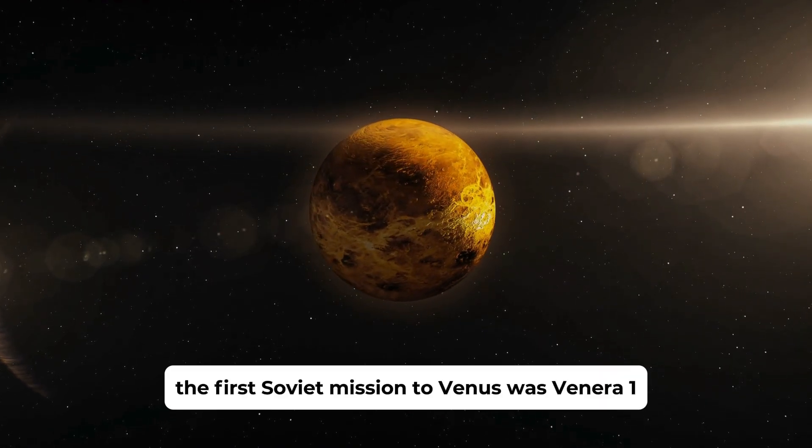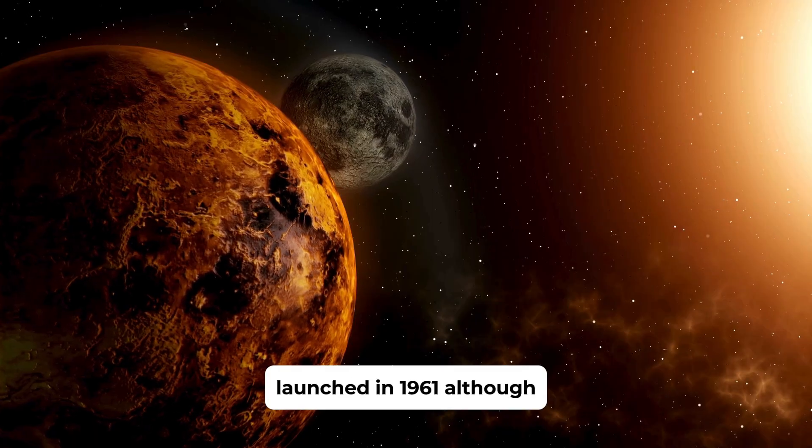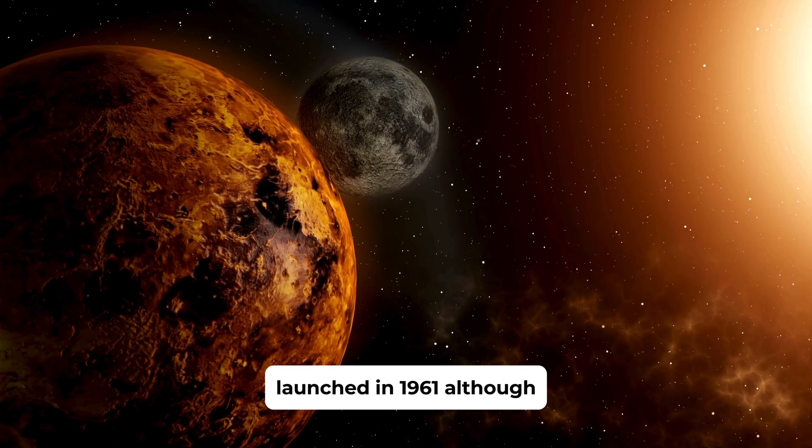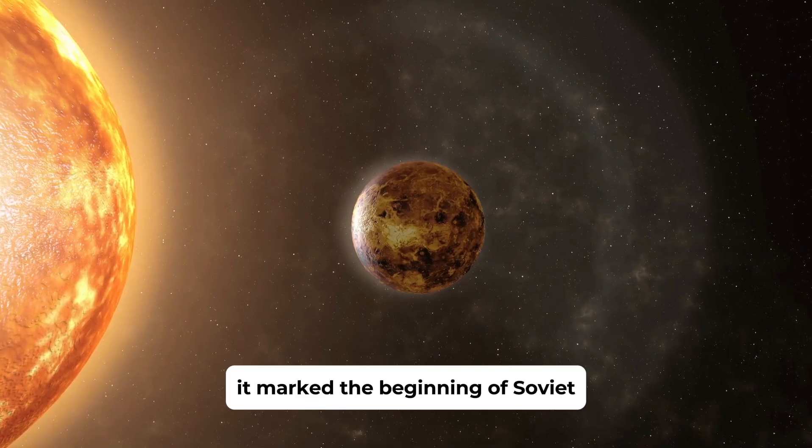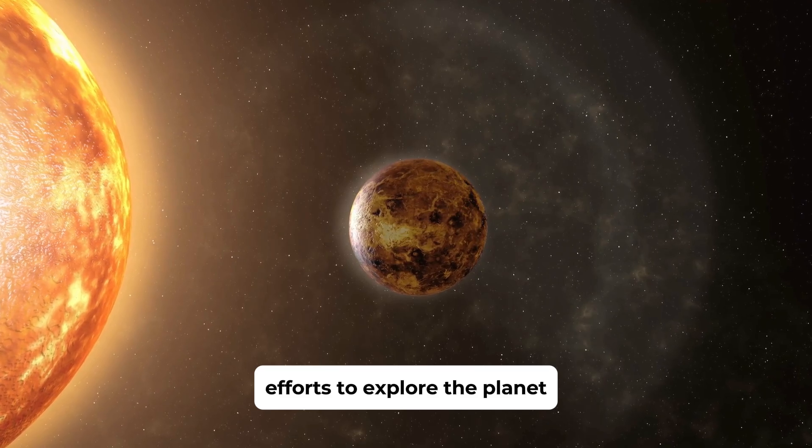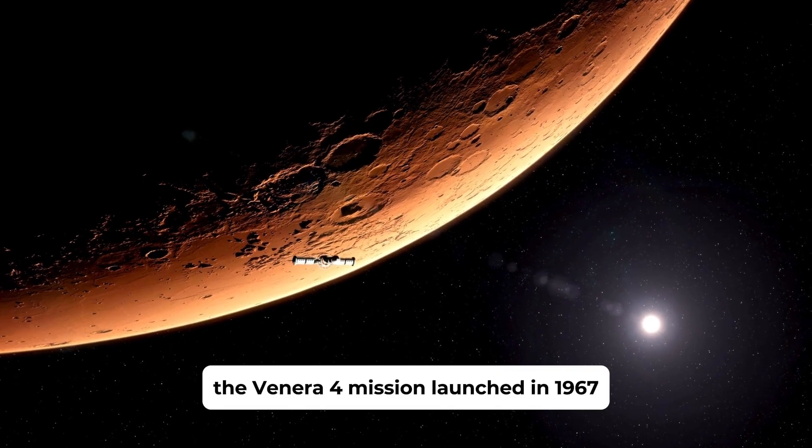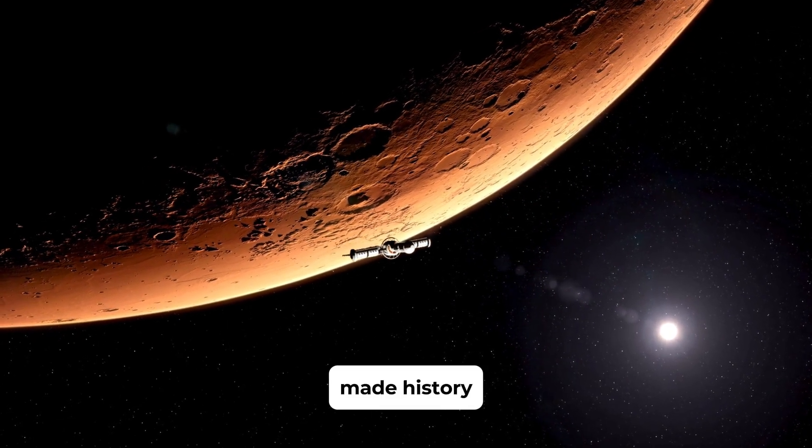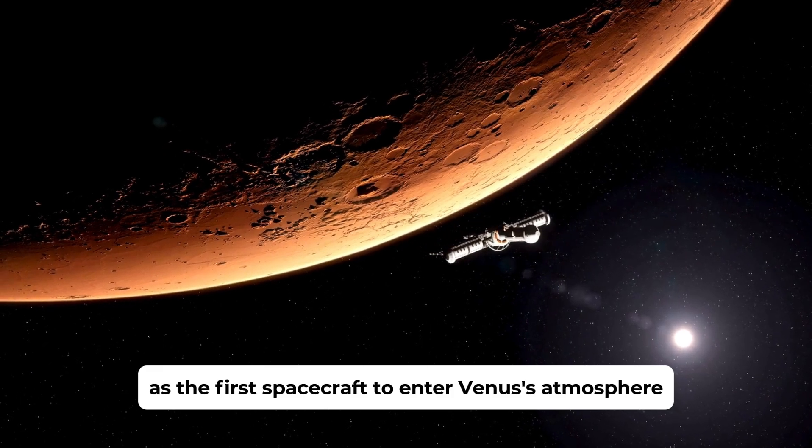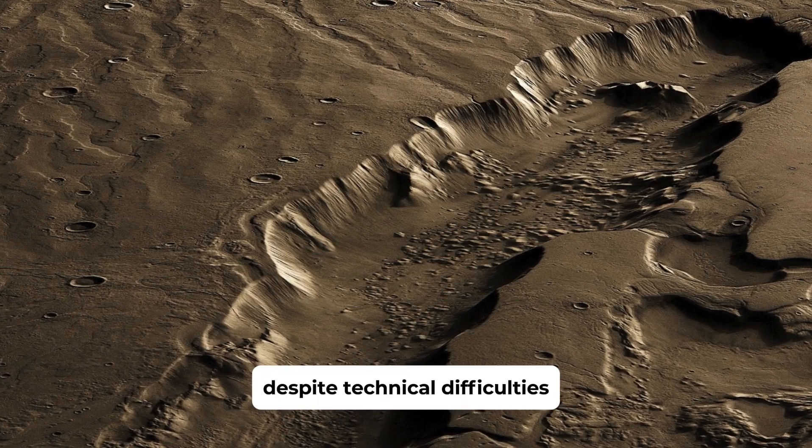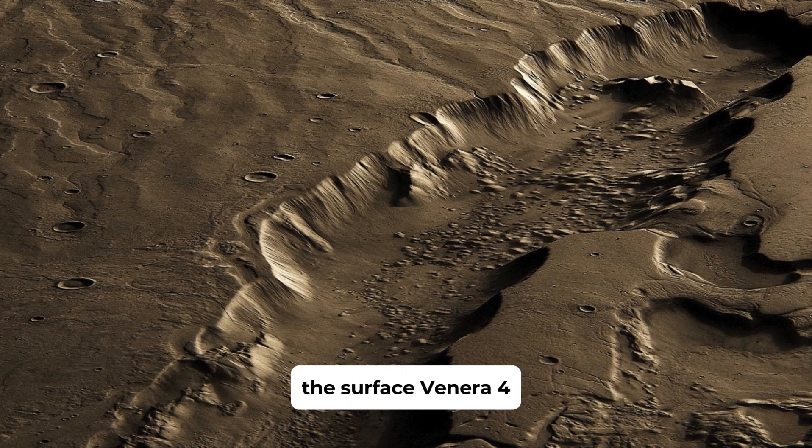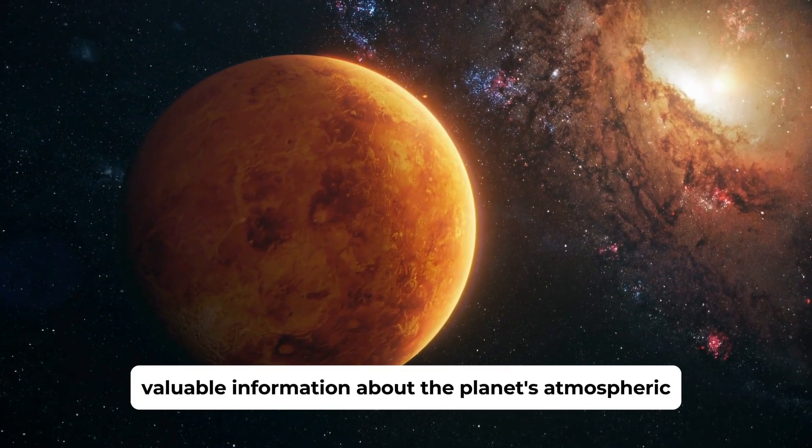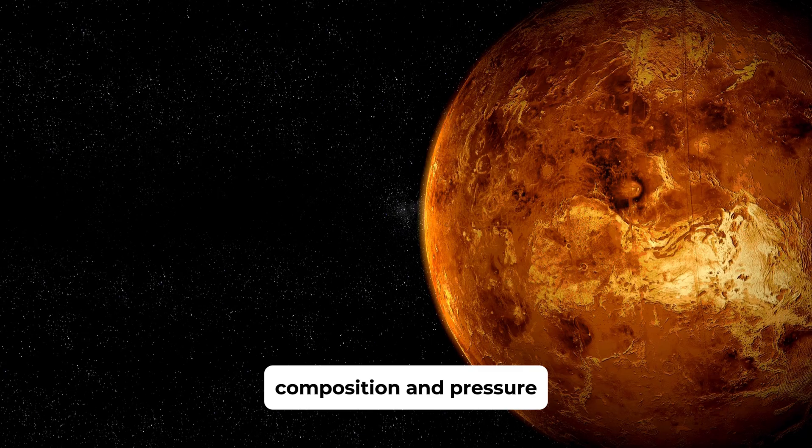The first Soviet mission to Venus was Venera 1, launched in 1961. Although Venera 1 lost contact with Earth before reaching Venus, it marked the beginning of Soviet efforts to explore the planet. The Venera 4 mission, launched in 1967, made history as the first spacecraft to enter Venus's atmosphere. Despite technical difficulties that prevented it from transmitting data from the surface, Venera 4 provided valuable information about the planet's atmospheric composition and pressure.